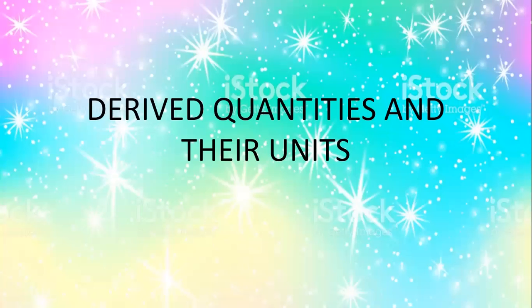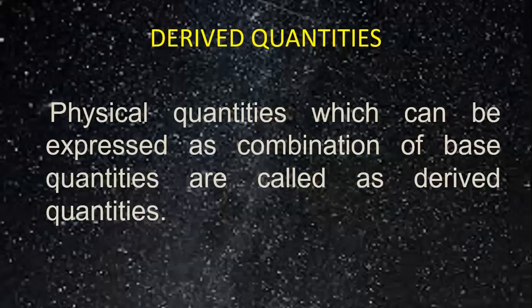Derived quantities and their units. What are derived quantities? The physical quantities which can be expressed as the combination of base quantities are called derived quantities. Any physical quantity which can be expressed in terms of fundamental or basic quantities is called a derived quantity. Here, if we take the example of density.